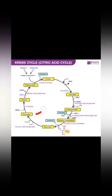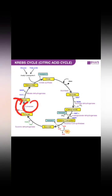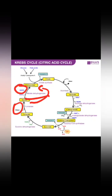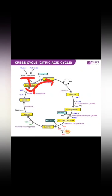Fumarate is converted into malate in the presence of the enzyme fumarase, and water is involved in this reaction. Finally, malate is converted back into oxaloacetate in the presence of the enzyme malate dehydrogenase, producing the third NADH. Oxaloacetate is regenerated and is ready to combine with the next acetyl-CoA to form citrate again.